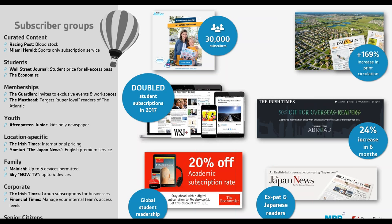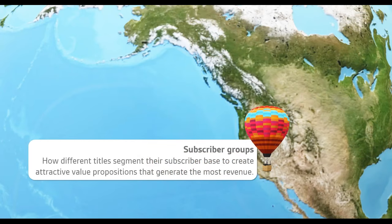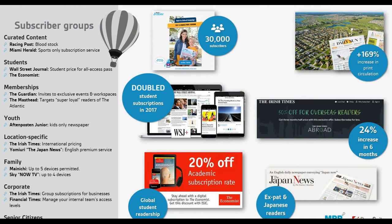A regional publisher told me they're actually thinking of following the FT's example and giving complimentary access to university students — filling up that funnel right from the beginning and seeing where that takes them. The last point on subscriber groups is around family passes — like Spotify and Netflix — where you can have multiple devices. Similar to the way Sky and Now TV handle multiple devices, think of a 'family pass' — not just corporate subscriptions but pulling more data into the platform by extending the number of devices people can read their digital subscription on.